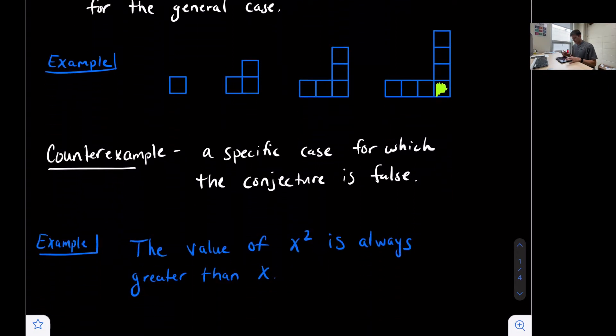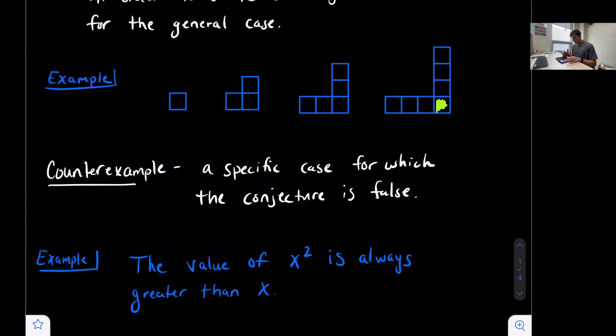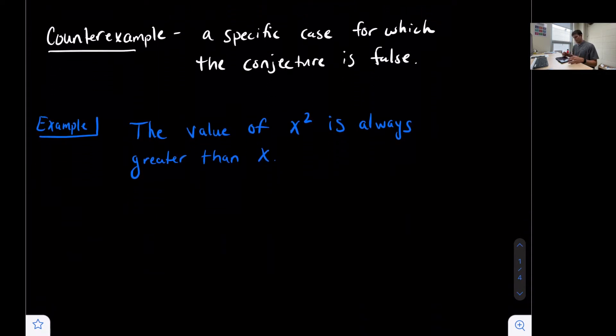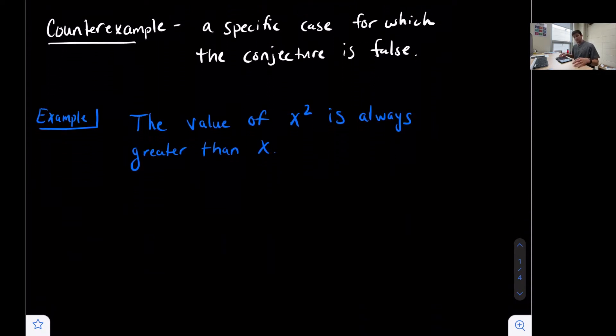Along with inductive reasoning, we look at what's called a counterexample, because for a conjecture to be true, it has to be true for all cases. So there can't be any cases whatsoever that render us a false statement.